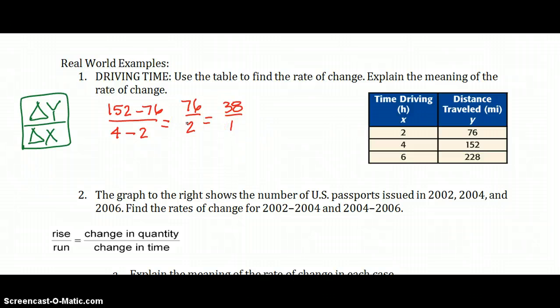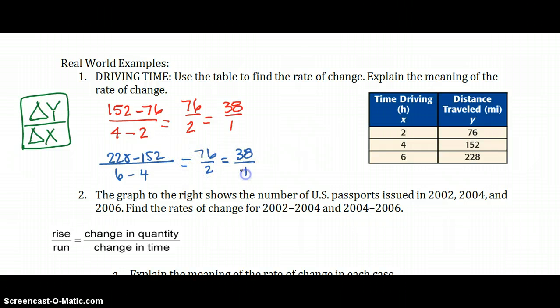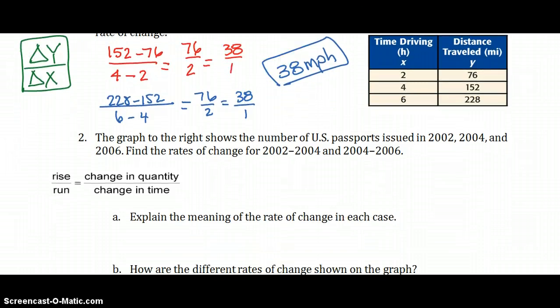All right. Let's just make sure it's a constant rate of change. Let's see if we get the same ratio when we pick another set of times. So let's check the other pair. So we've got 228 minus 152 over 6 minus 4. Sure enough, 76 over 2, we're going to end up with the same rate. So it is a constant rate of change. That means if we plotted these points, it would be linear. Now what does this mean? 38 to 1. Remember, x was our time, and our time was in hours. So distance was in miles. So we are traveling at a rate of 38 miles per one hour. That's what that means.